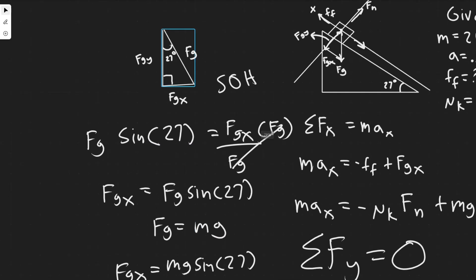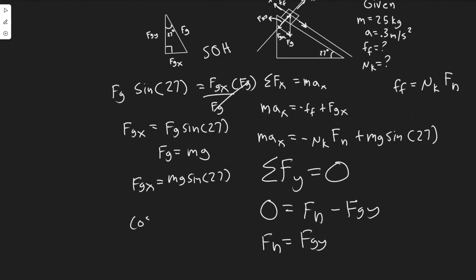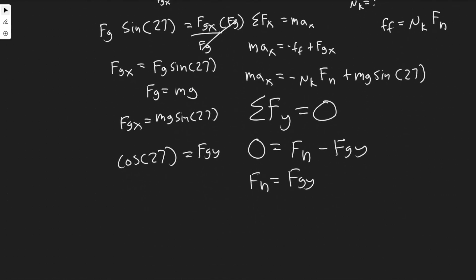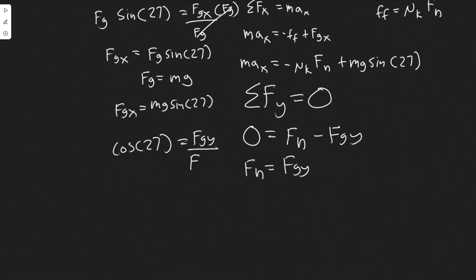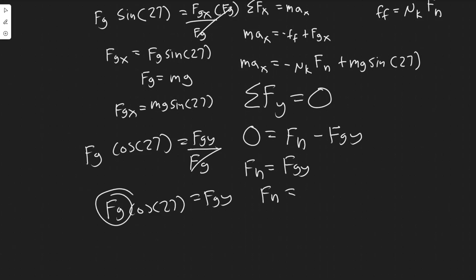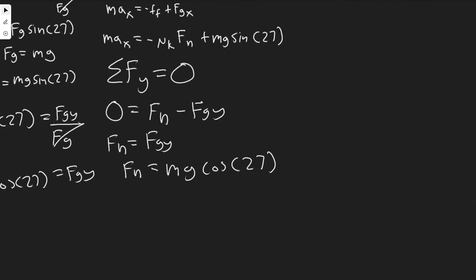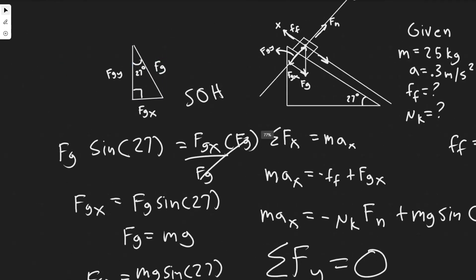Using cosine to find fg_y from the triangle: cosine equals adjacent over hypotenuse, so cos(27) = fg_y / f_g. Therefore fg_y = f_g × cos(27) = mg × cos(27). Since N = fg_y, the normal force equals mg × cos(27).